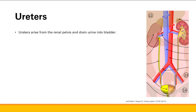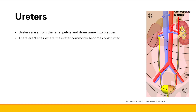So we have the ureter draining from the renal pelvis down into the bladder. I want to talk about the three locations where the ureter most commonly becomes obstructed, because this is clinically relevant. Location number one is the ureteropelvic junction — the junction between the ureter and the pelvis of the kidney — which can become obstructed, as seen in the disease ureteropelvic junction obstruction.